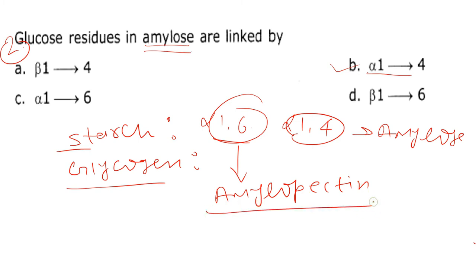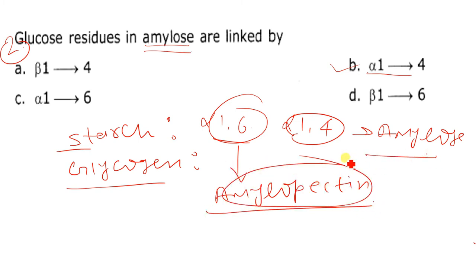So the alpha-1,6 part forms amylopectin, and the alpha-1,4 part, in both starch and glycogen, forms amylose.